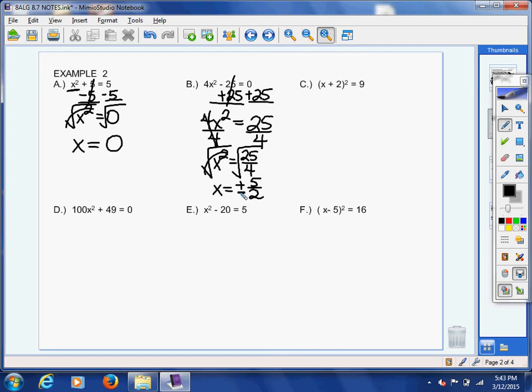Letter C is really similar. Notice that the quantity that's being squared already is by itself. Now, if I want to unsquare that quantity, then what I would do is take the square root of the quantity and take the square root of 9. What I do to one side, I must do to the other.